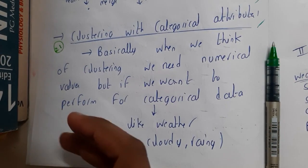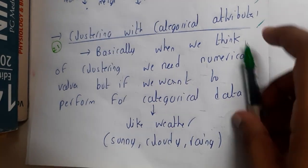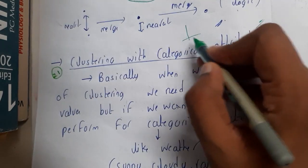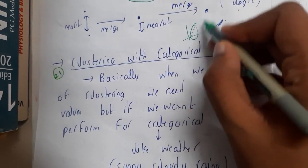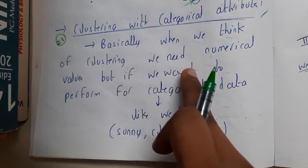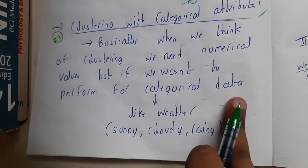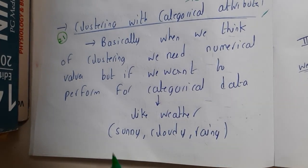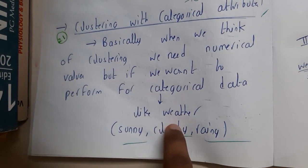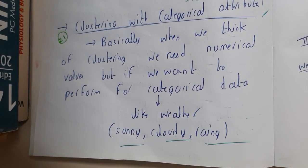Basically, when we think of clustering we need numerical type, even binary also needs numbers to perform clustering because we will be plotting points of x and y's to get the graph and form these clusters. When we think of clustering we need numerical values, but if we want to perform for categorical values it is not possible because those are some letters or words. In terms of weather, we have sunny, cloudy, and rainy.